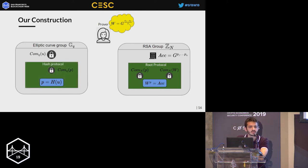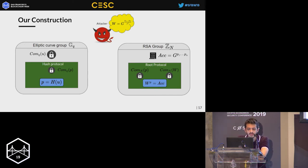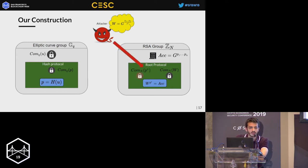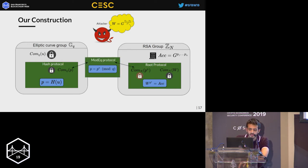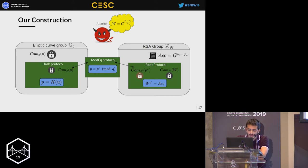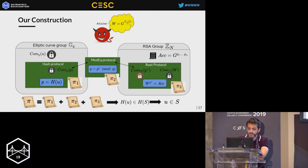What we don't know yet is that this prime p is actually the hash of the committed element u. For this we apply an extra protocol that proves a hash computation in the elliptic curve group. When considering soundness, a malicious prover can put a different commitment in the RSA group — committing to p on the left and p* on the right — so we need an extra proof of equality showing that the left and right commitments commit to the same element. Composing these three zero-knowledge protocols gives us a zero-knowledge protocol for set membership.